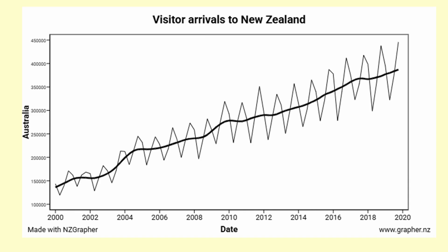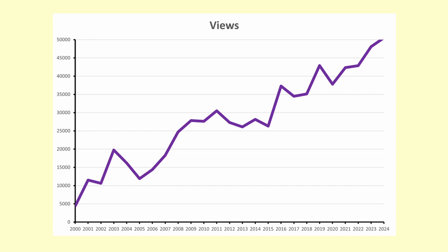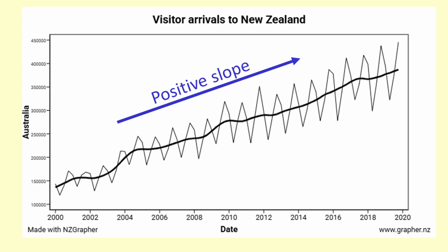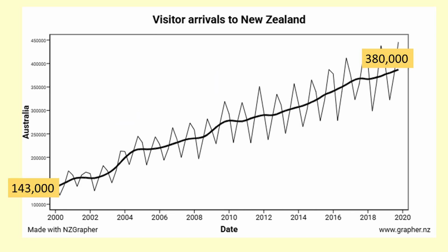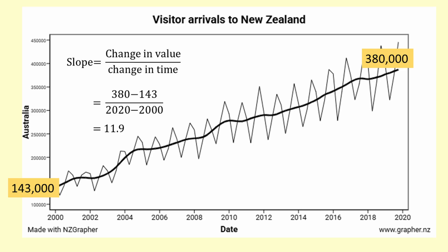There are certain terms used to describe the behaviour of the trend. When a trend has a positive slope it means the values are generally increasing over time. You can see that the number of visitors arriving in New Zealand from Australia has increased steadily over the 20 years. We should report that the overall increase for quarterly visitors is from 143,000 to 380,000 over the 20 years, meaning that the quarterly visitor numbers have increased by 11,900 per year.